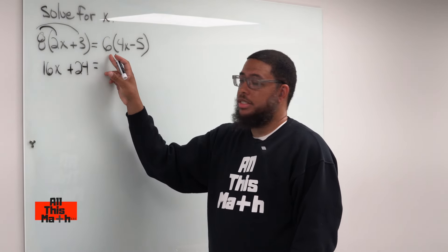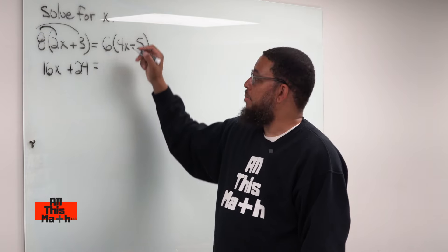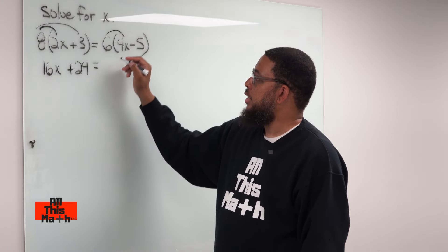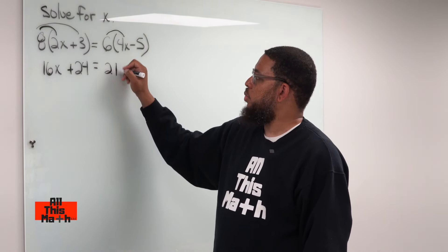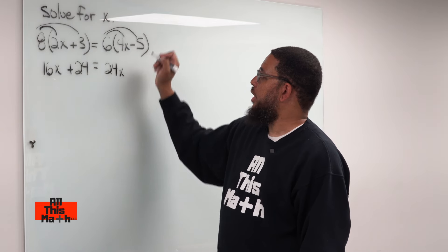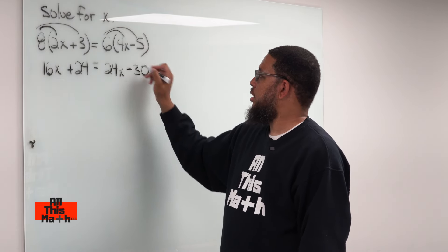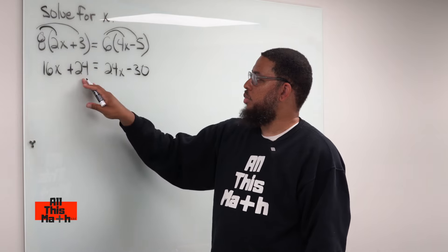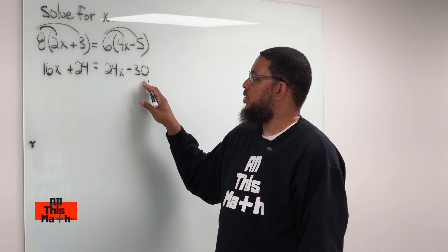and we're going to do the same thing with this 6. 6 gets multiplied by everything inside the parentheses. 6 times 4x is going to give us 24x, and 6 times negative 5 is going to give us negative 30. So 16x plus 24 is equal to 24x minus 30.